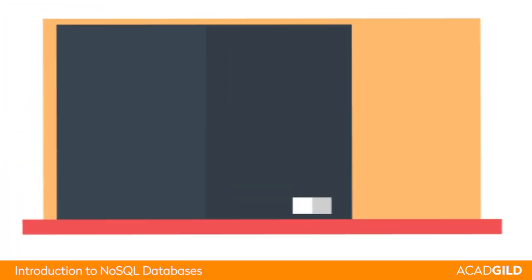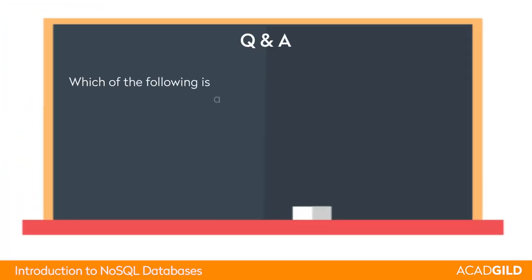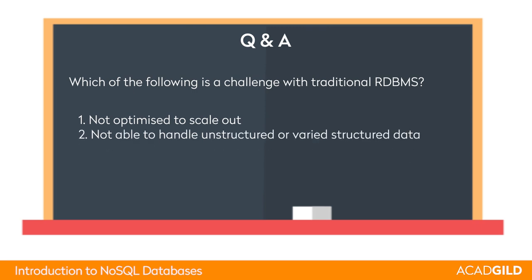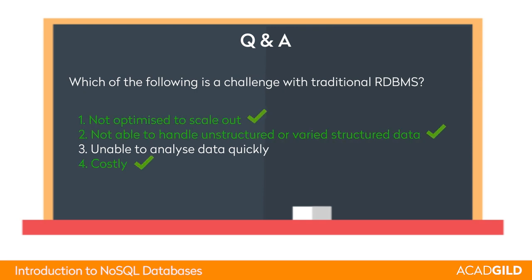Now, the first quiz question: which of the following is a challenge with the traditional RDBMS? That they are not optimized to scale out, that they are not able to handle unstructured or varied structured data, or that they are unable to analyze data quickly, or that they are costly? The correct answers are 1, 2, and 4. Traditional RDBMS are not optimized to scale out, and they are not able to handle unstructured data. They can analyze data quickly, which is good, but they are very costly.